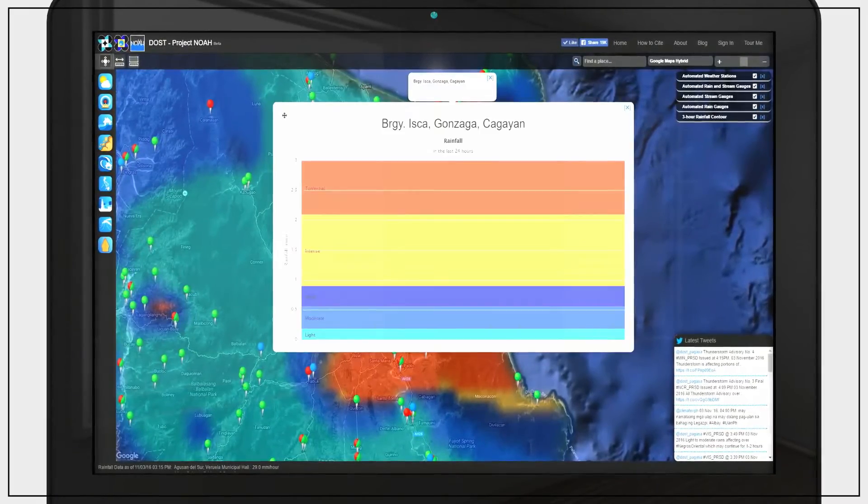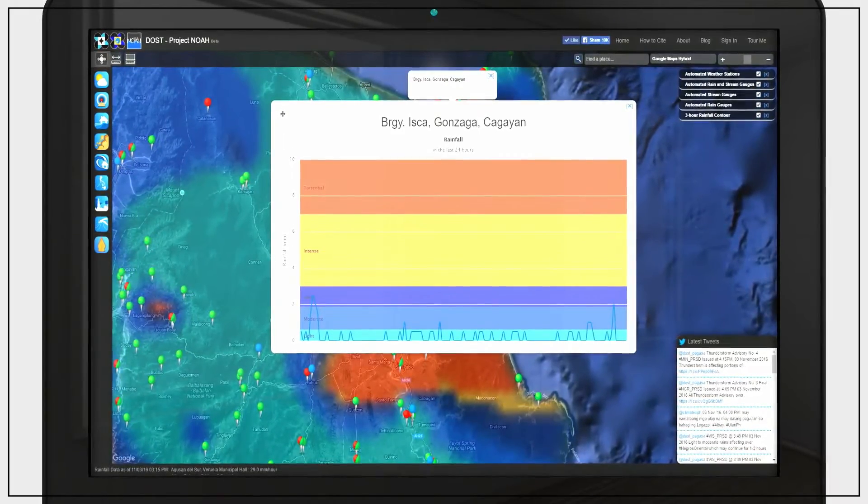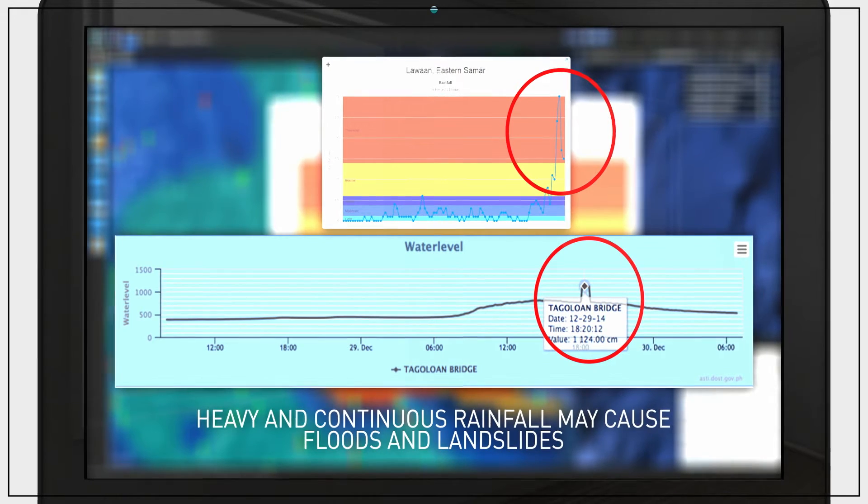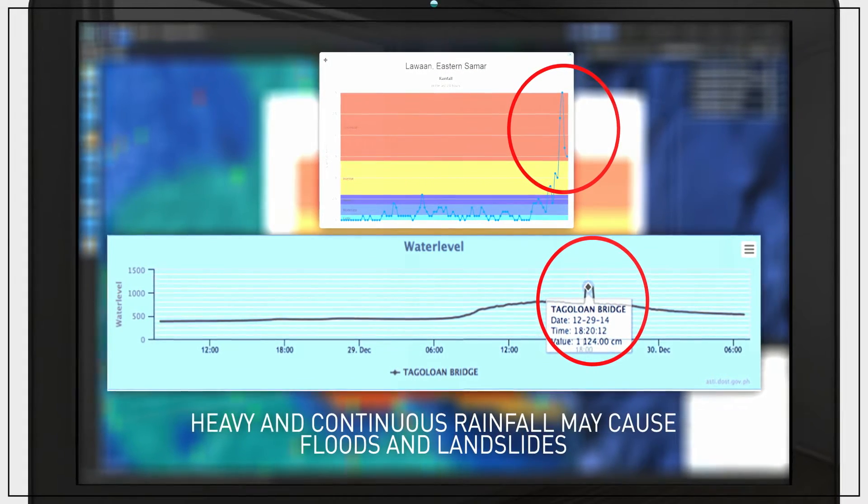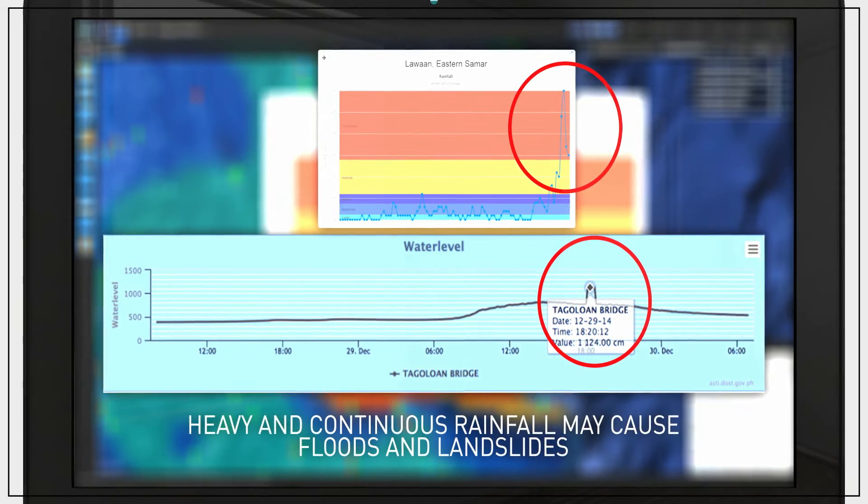A graph will show the rise and fall of water in that corresponding stream in the last 24 hours. You can also check water levels from higher elevations that can flow to low-lying areas, which in turn may cause flooding.